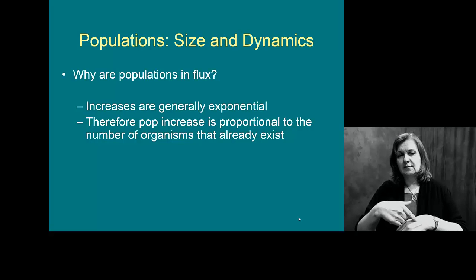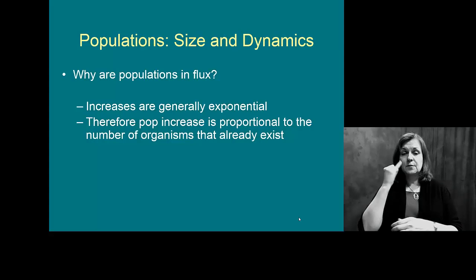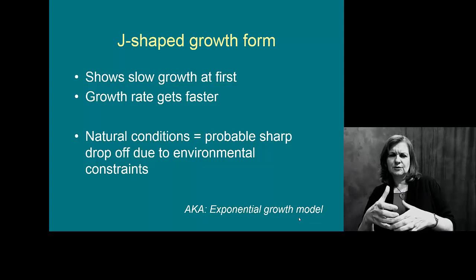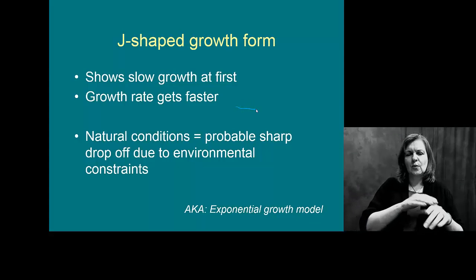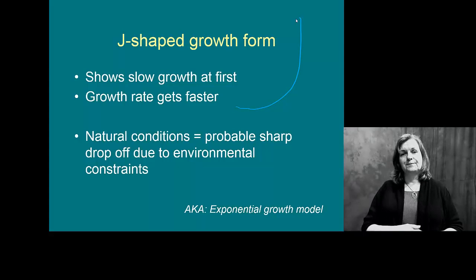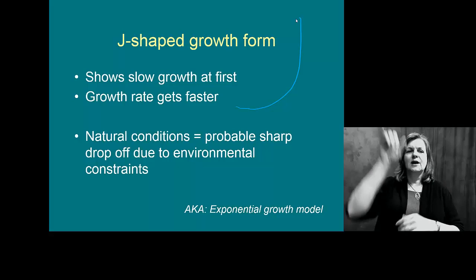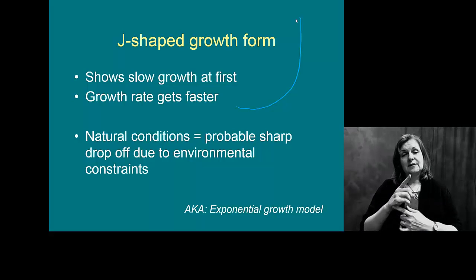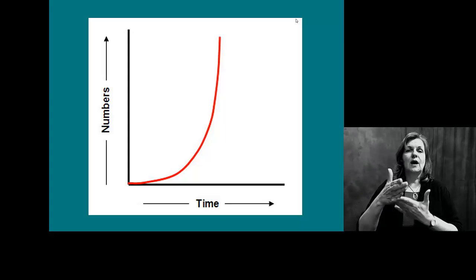What we want to think about is how is that population changing over time. If organisms are dying, how does that affect it? If new organisms move in, how is that affecting it? The J-curve shows this natural slow growth at first, but then the population really takes off — and this growth form is eventually going to top out.